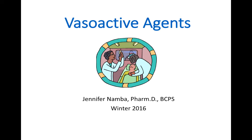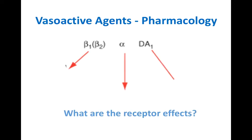In preparation for talking about the treatment of shock, I thought it would help to first review some of the vasoactive treatment options available for these patients. To start off, let's review the pharmacology of the different receptors that these vasoactive agents work on. The first are the adrenergic receptors, which include beta-1, beta-2, alpha, and also dopamine-1 receptors.